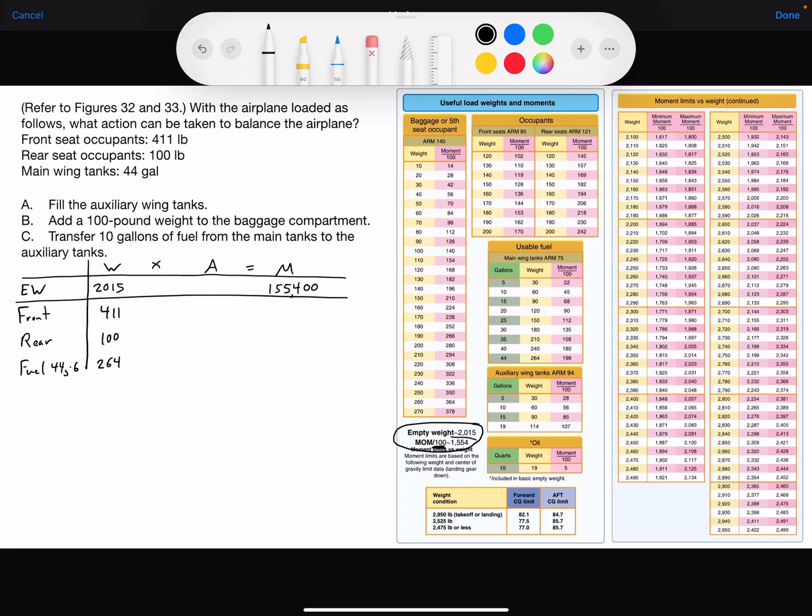For the front seat, we go to figure 32 occupants, front seat. We do not have the weight listed here, but I can see the arm is 85. So front seat times an arm of 85 inches gives us a moment of 34,935.